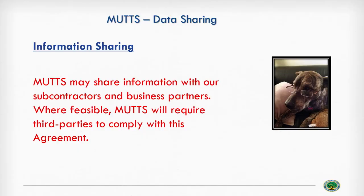Information sharing — a very common one in terms of service. MUTTS may share information with our subcontractors and business partners. Where feasible, MUTTS will require third parties to comply with this agreement. Subcontractors are understandable, but the phrase 'where feasible will make them comply' is problematic.